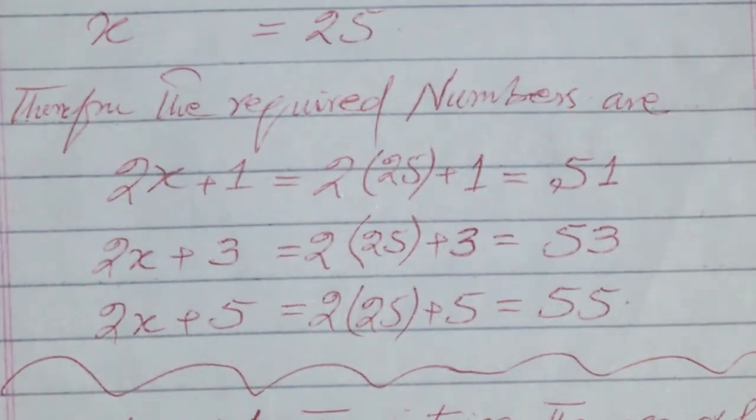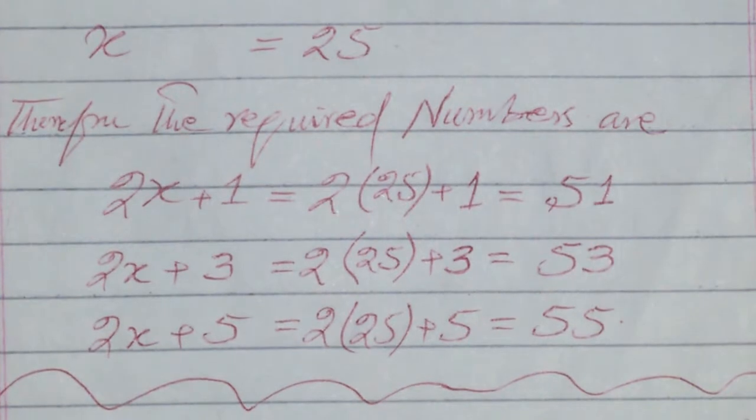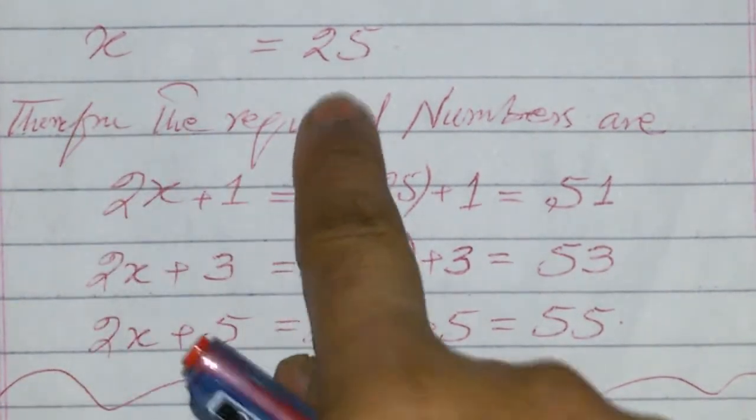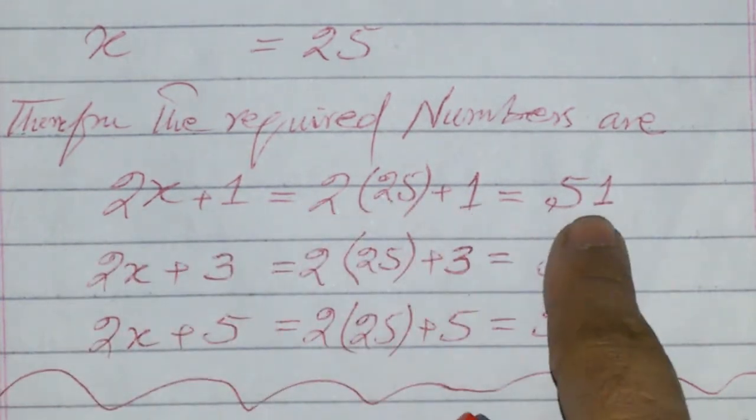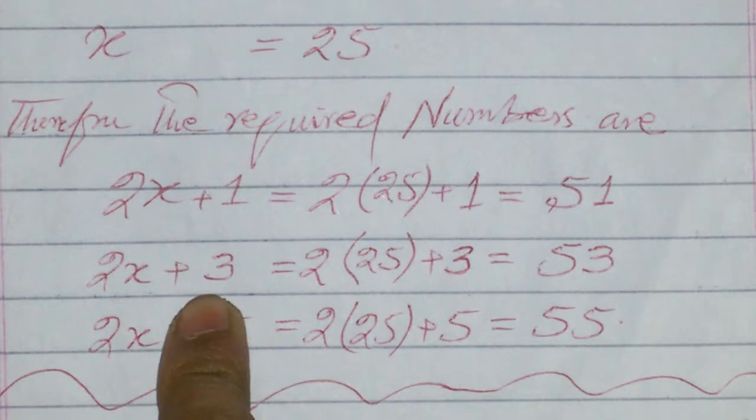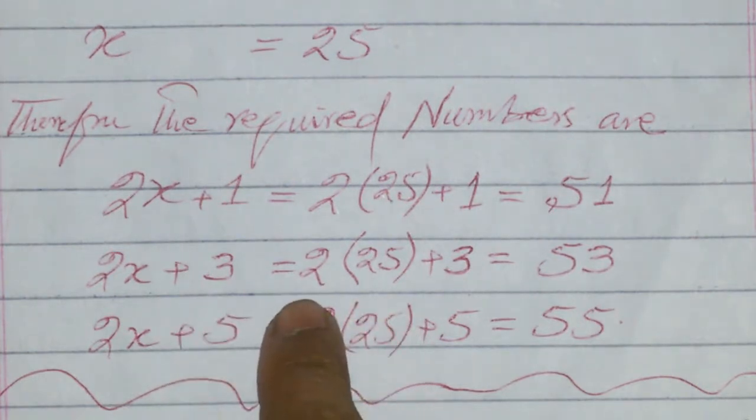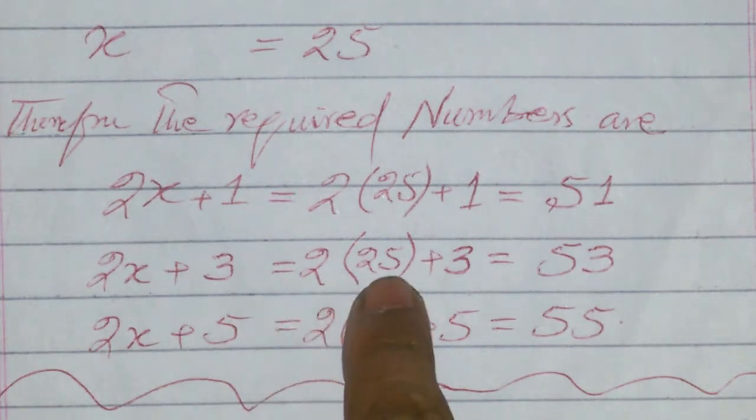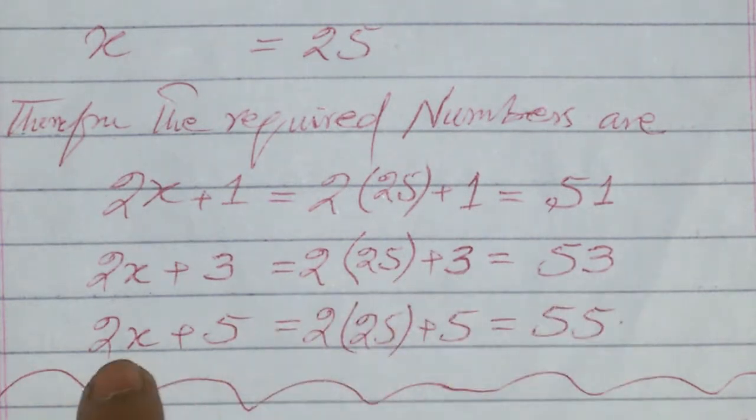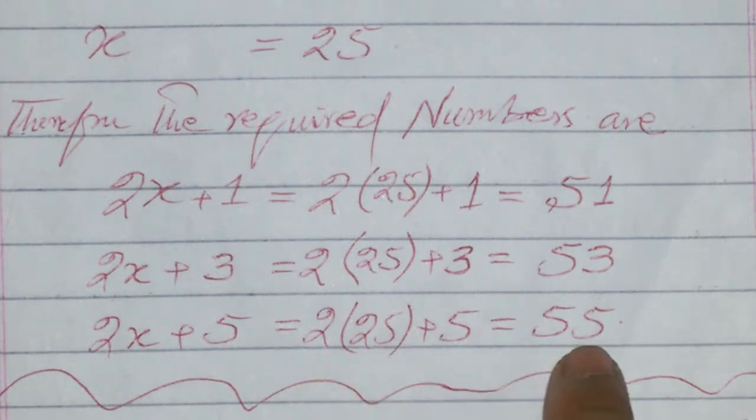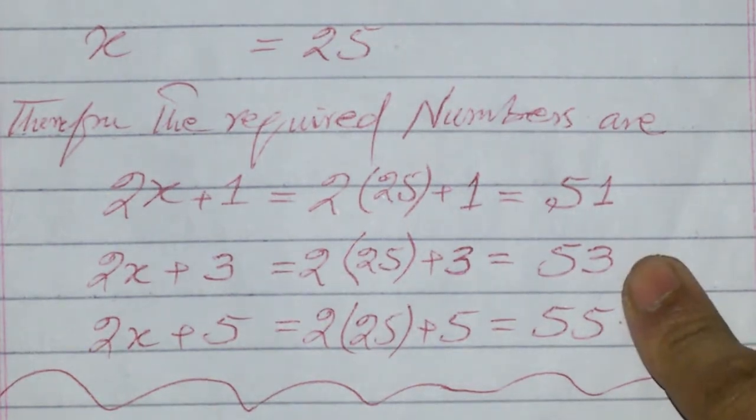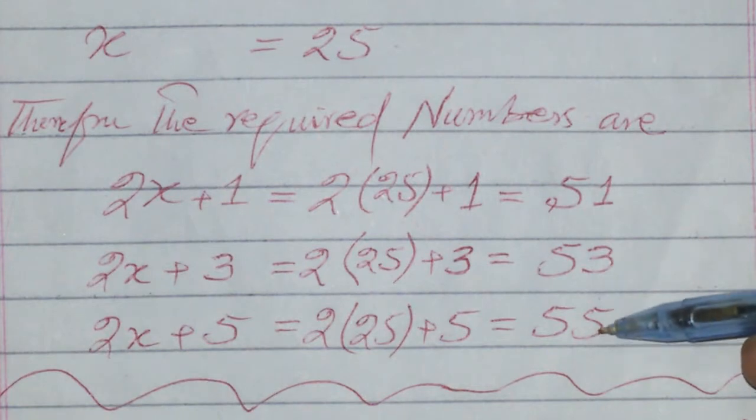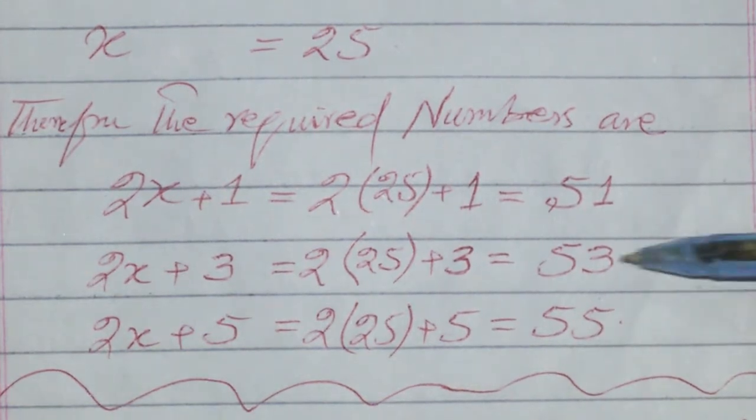Now we can find the numbers. Since x equals 25, the first number is 2x+1 equals 2(25)+1 equals 51. The second consecutive odd number is 2x+3 equals 2(25)+3 equals 53. The third is 2x+5 equals 2(25)+5 equals 55.